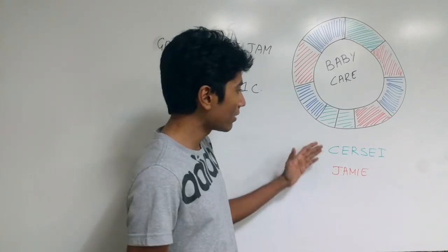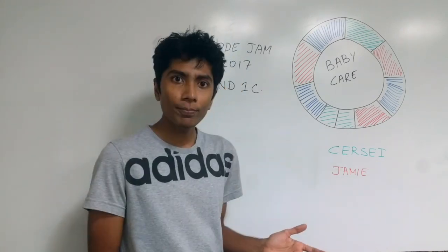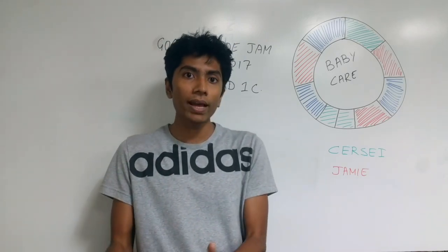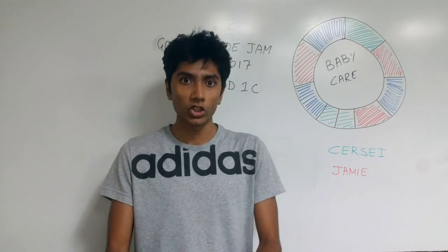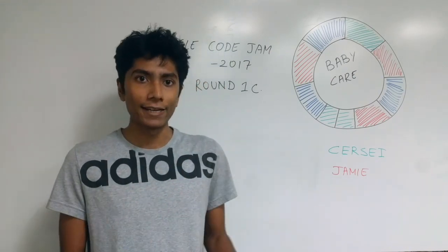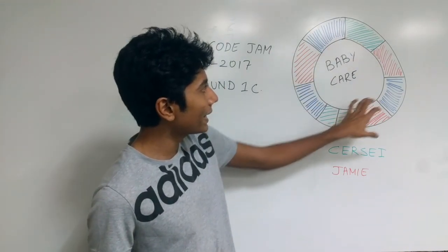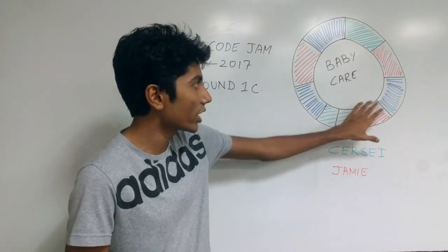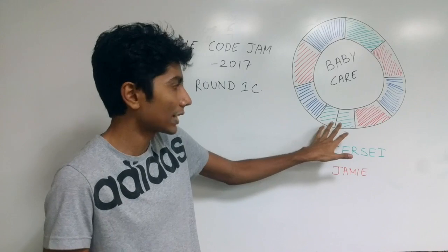But what it says is you have Cersei and Jamie who have a baby and they are also very busy people so they need to go out to work. So every day Cersei and Jamie have to take care of the baby for 12 hours each. So that makes 24 hours the entire day ends. And you can see that the day is represented in terms of a set of segments. Red is Jamie and green is Cersei. So that's when they are going out to work.